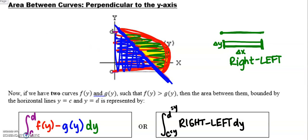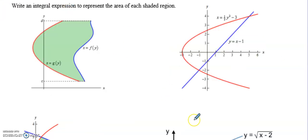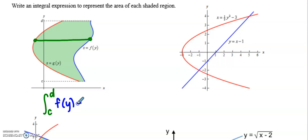If you're asking how to write a function in terms of y, it's simple: instead of y equals, you write x equals. To write an integral expression representing the area of each shaded region from right to left, sum from c to d of the right function f(y) minus the left function g(y), all with respect to the y-axis. Notice that everything in this integral references the y-axis.